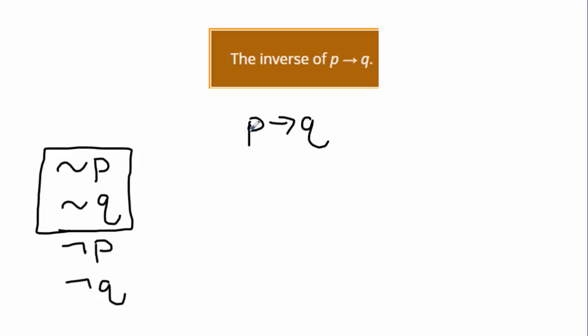The negation of this hypothesis p would be the negation of p, or we say not p, implies the negation of q, which would be not q. So this is the inverse.